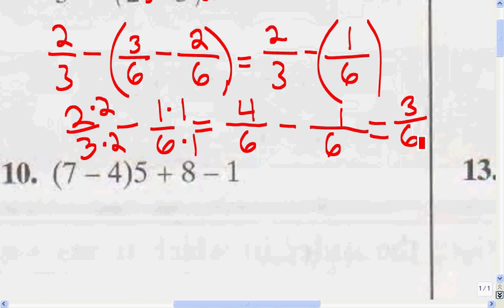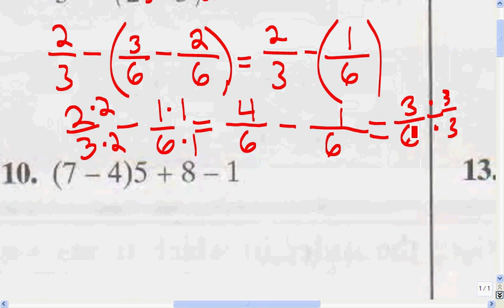Now this fraction can be reduced because there is a common factor for both numerator and denominator, and the common factor is 3. So we're going to divide both the numerator and the denominator by 3. 3 divided by 3 is 1, and 6 divided by 3 is 2, because 3 times 2 equals 6 and 3 times 1 equals 3. So my final answer is 1 over 2.